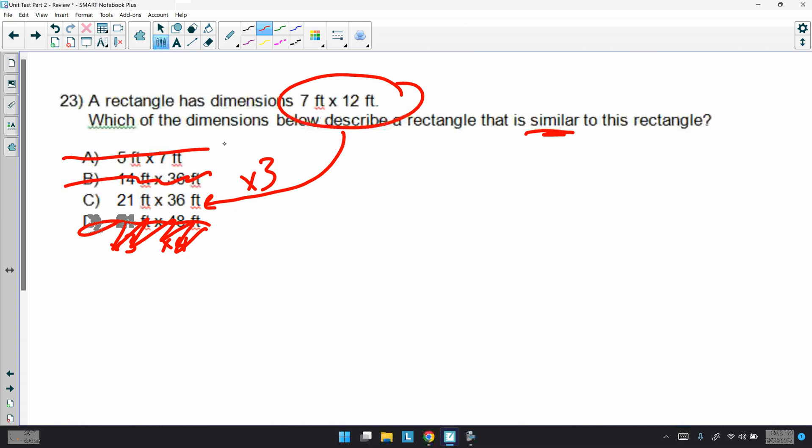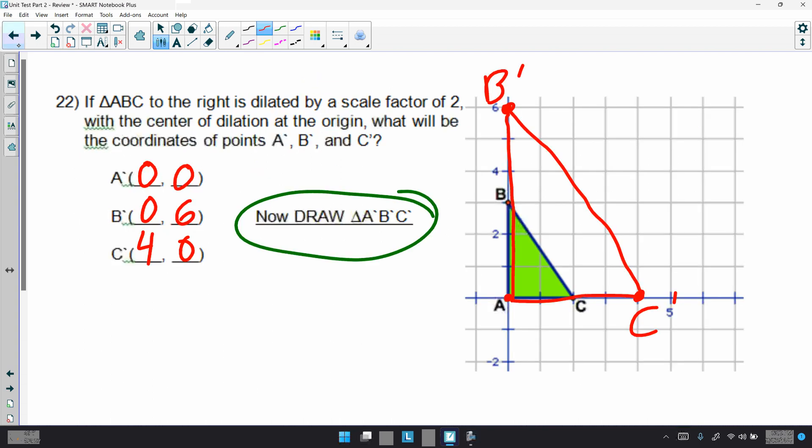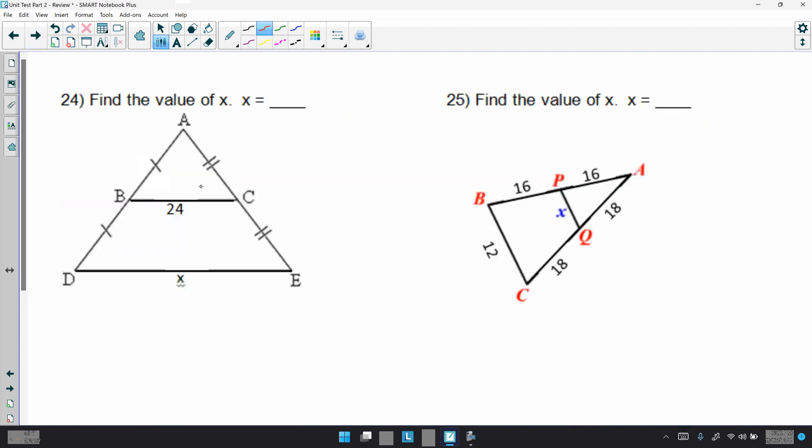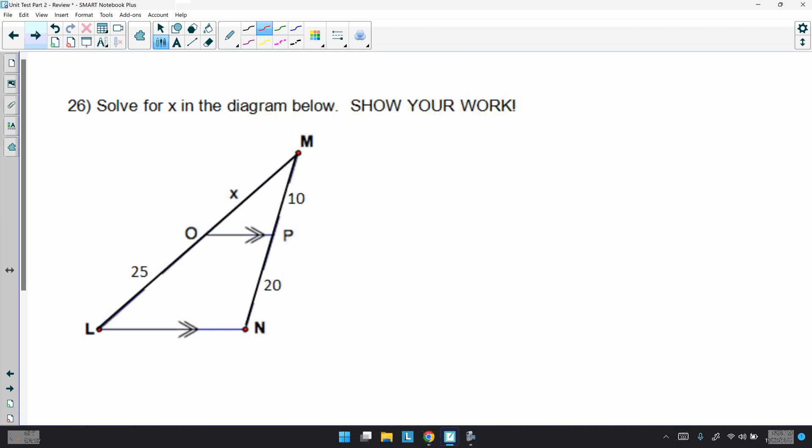24. Again, these are mid-segments. We have a special postulate, or excuse me, a theorem for this. You simply just got to multiply by 2 to work your way outside the triangle there. So, 24 times 2 is 48. And over here, we already have the number on the outside, and you could argue we're going back inside. So, the opposite of that would be multiplying by a half, or simply dividing by 2. 12 divided by 2 is 6.